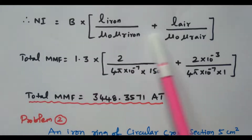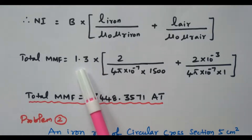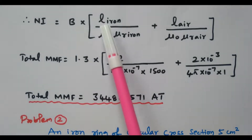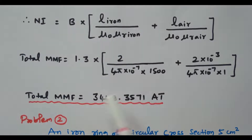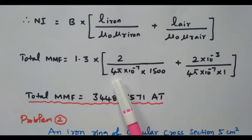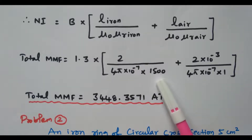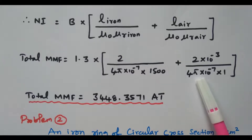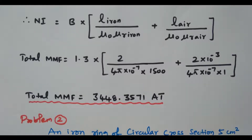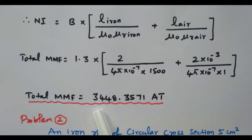Substituting values: B is 1.3 Weber per meter square, iron path length is 2 meter, air gap length is 2 × 10⁻³ meter, μ₀ is 4π × 10⁻⁷, relative permeability of iron is 1500, and μr of air is 1. After simplifying, the total MMF for this circuit is 3448.3571 ampere turns.